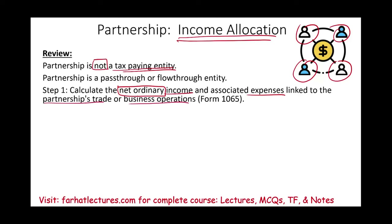For these types of income and expenses, we report them on Form 1065. The first thing we do is ask: is this an overall business activity? If the answer is yes, it goes on Form 1065, whether it's income or an expense.